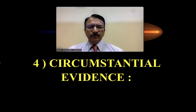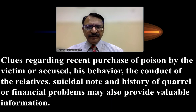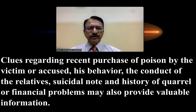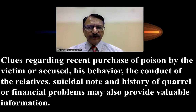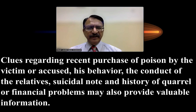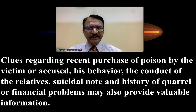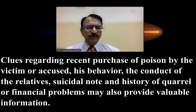Circumstantial evidence should also be investigated, including clues about recent purchase of poison by the victim or accused, their behavior, the conduct of relatives, any suicidal note, history of quarrel, fight, or financial problems — all of which may provide valuable information.